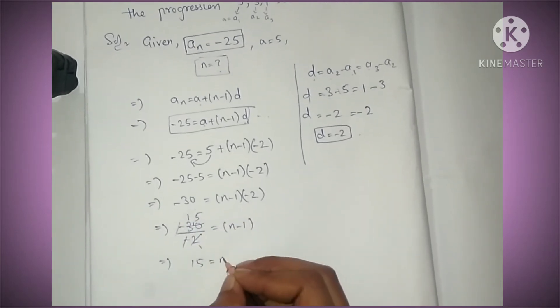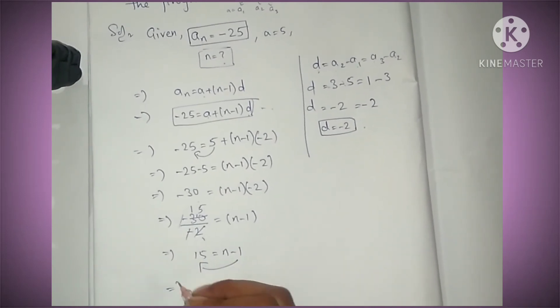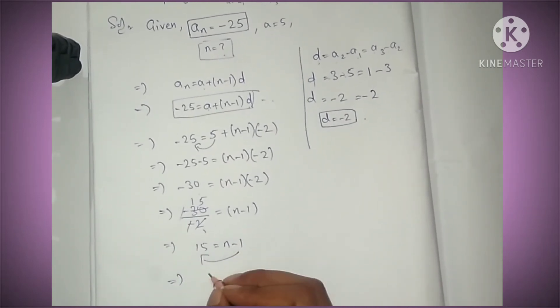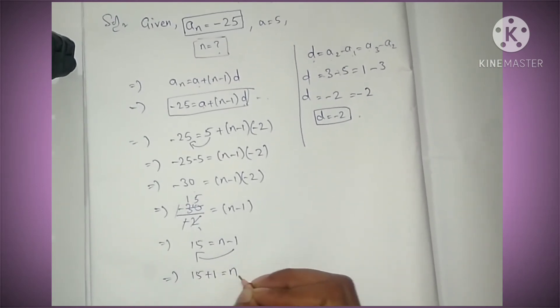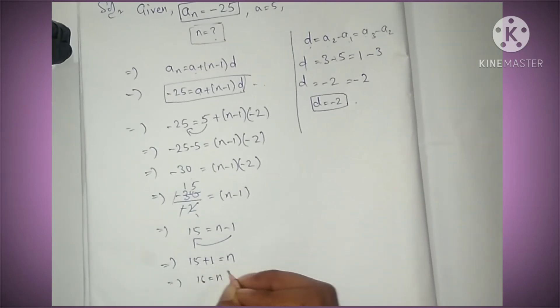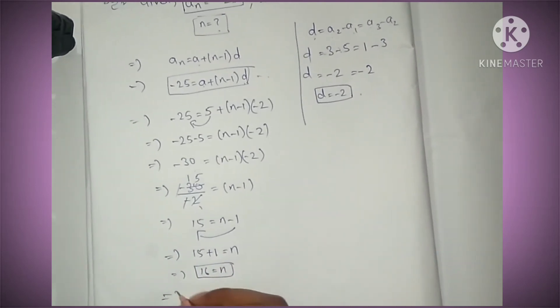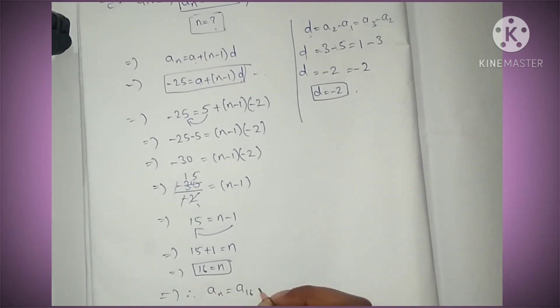Sending -1 to the other side, the sign changes: 15 + 1 = n. 15 + 1 = 16. Therefore an = a16, the 16th term.